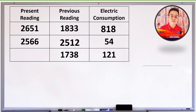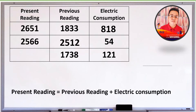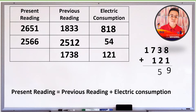Ang formula sa pagkuha ng present reading ay previous reading plus electric consumption. Ang ating previous reading ay 1,738 kWh. At ang ating electric consumption ay 121 kWh. Ipag-add natin sila. 8 plus 1 is 9. 3 plus 2 is 5. 7 plus 1 is 8. Bring down 1. Ang ating present reading ay 1,859 kWh.